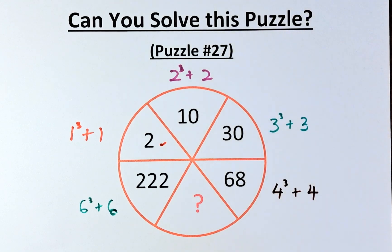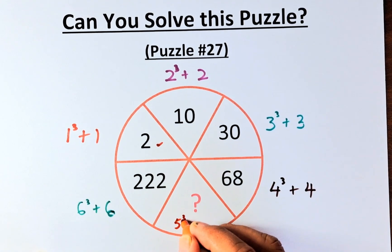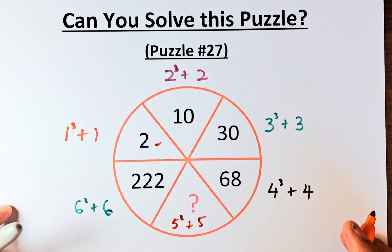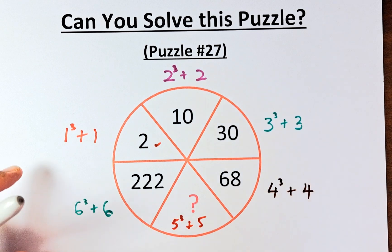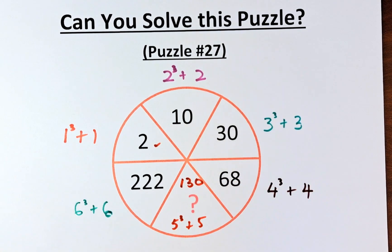So the answer for the question mark is going to be, I'm going to write here, 5 cube plus 5. 5 cube is going to be 125 plus 5. Question mark is going to be 130.